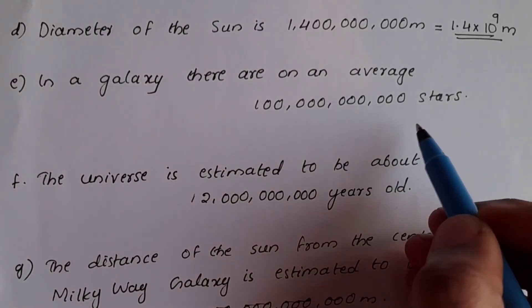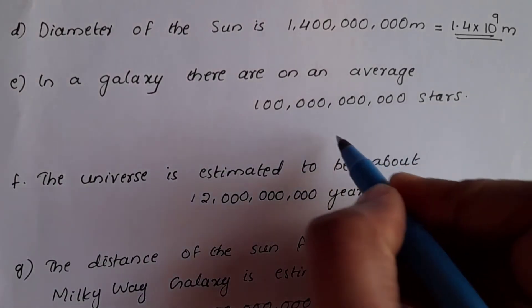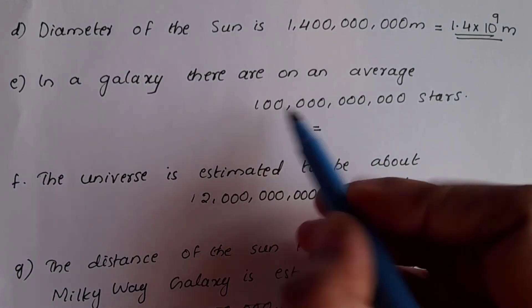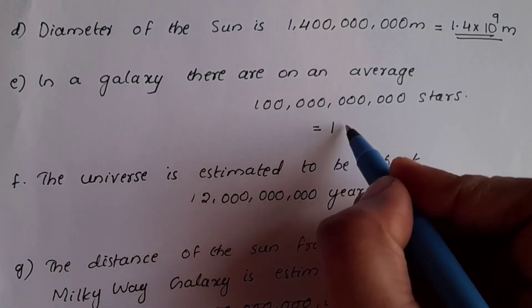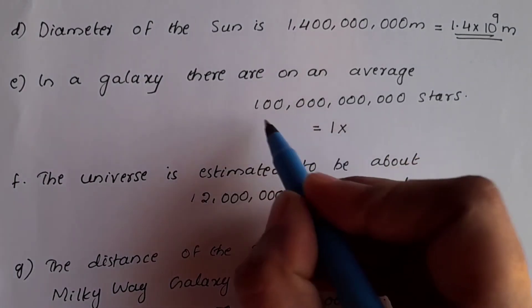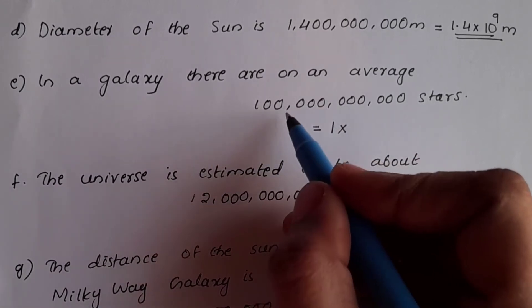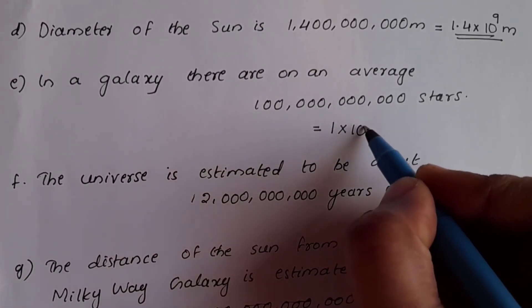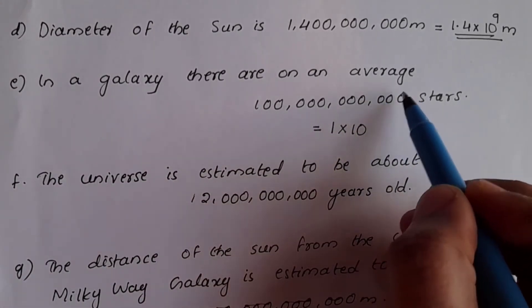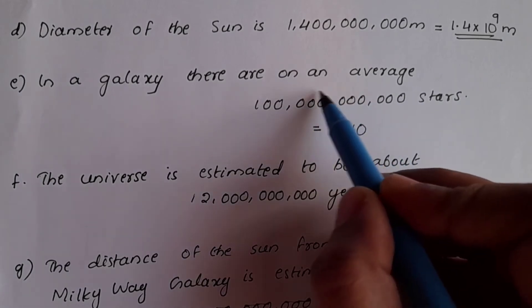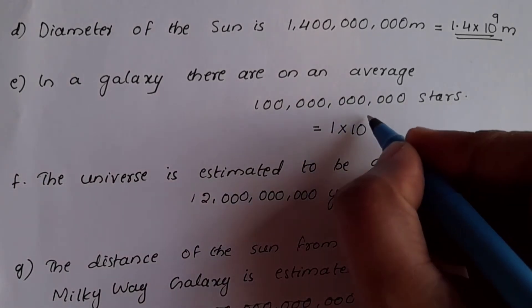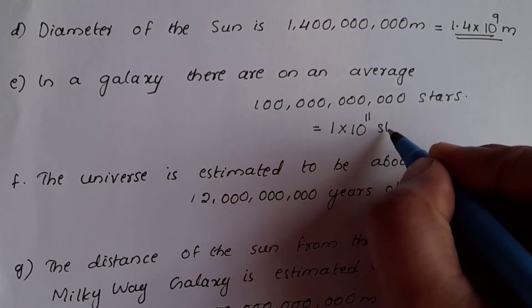The next number in standard form is 1.5 into 10 raise to. The total number of digits is 12, and 12 minus 1 is 11. So the answer is 1.5 into 10 raise to 11.